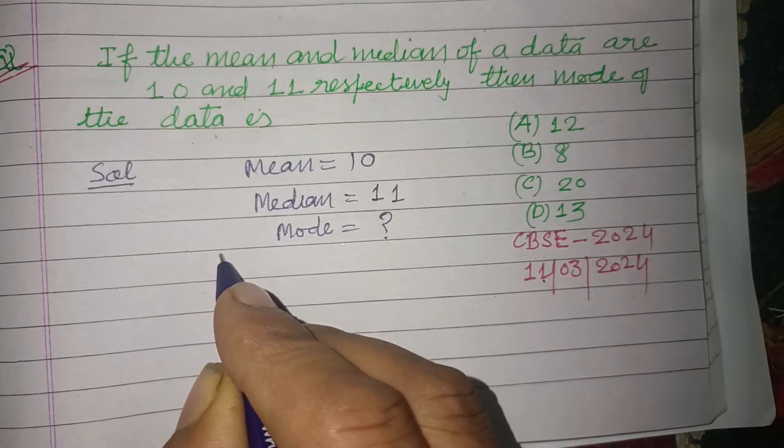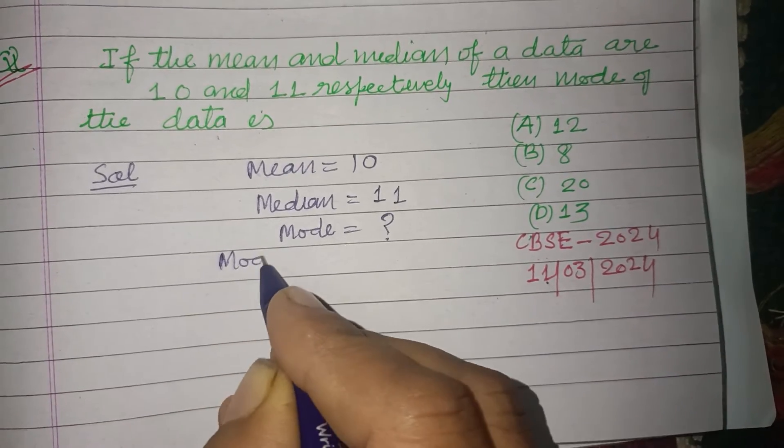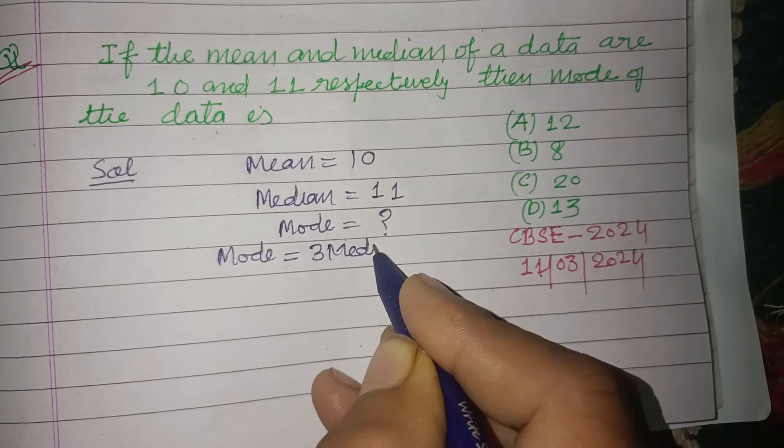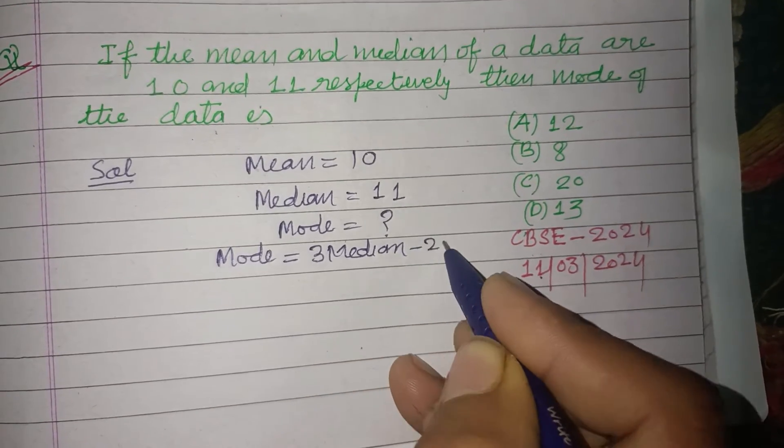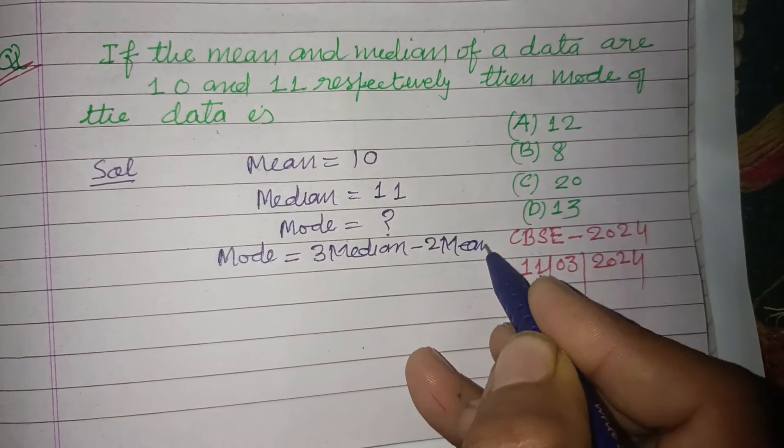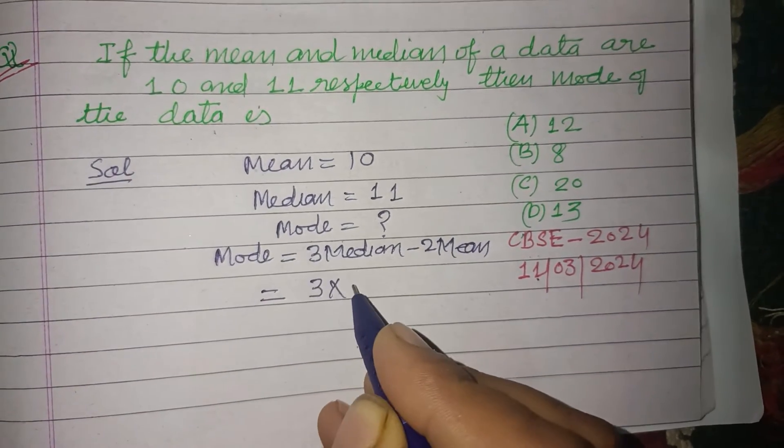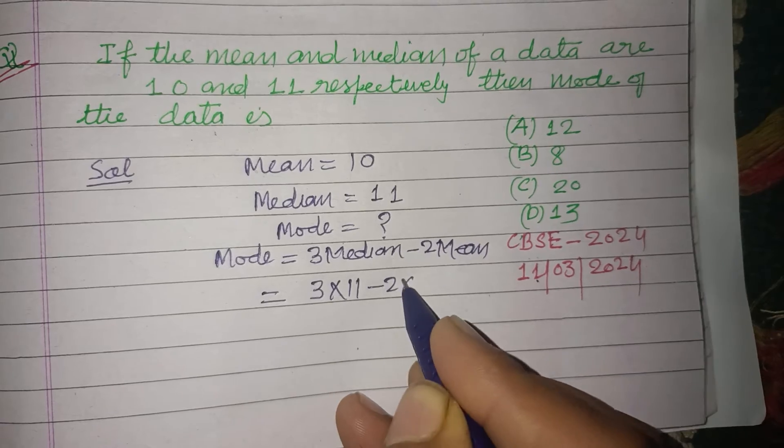The relation is: Mode equals 3 times median minus 2 times mean. Putting the values: 3 times 11 minus 2 times 10.